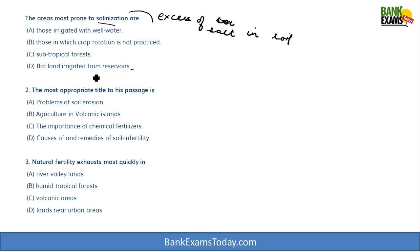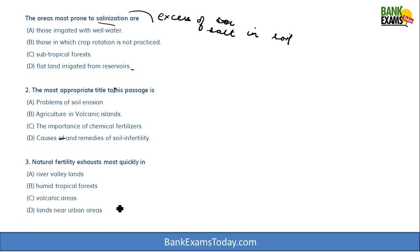The second question is: the most appropriate title to this passage is — options are: problem of soil erosion, agriculture in volcanic islands, the importance of chemical fertilizers, and causes and remedies of soil infertility. The third question is: natural fertility exhausts most quickly in — with options: river valleys, humid tropical forests, volcanic areas, and land near urban areas.